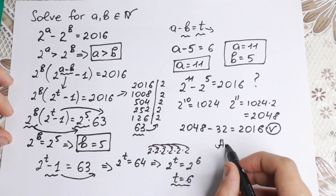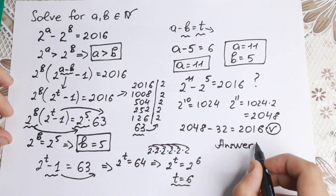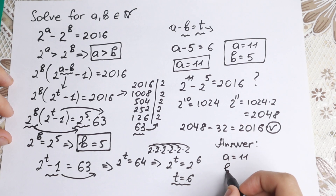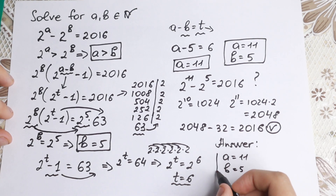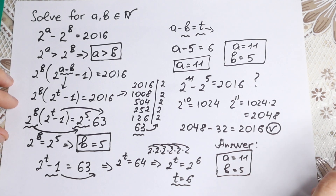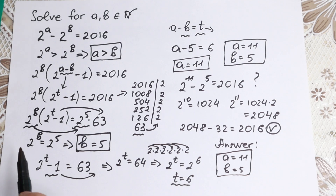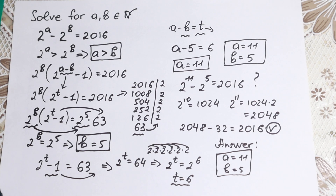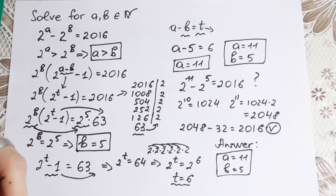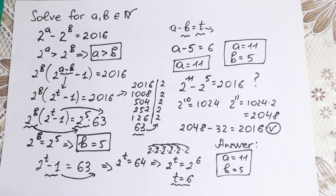Our final answer: a equals 11 and b equals 5. You could solve it by inspection, but math is about a rigorous solution, not inspection. This is a classic method to solve it. I hope you enjoyed it and learned something new. Put your thumbs up, subscribe for more videos — thank you for watching and see you in the next video.